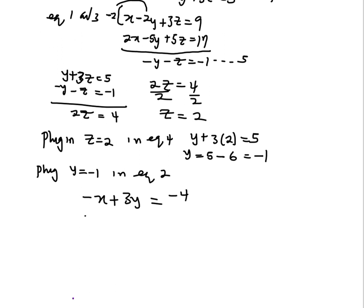So, I'm going to have negative x plus 3 into negative 1 equals negative 4. Negative x is going to be negative 4 plus 3. So, I'm having negative x is negative 1, and then x equals 1.